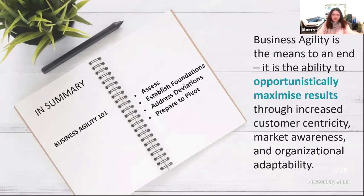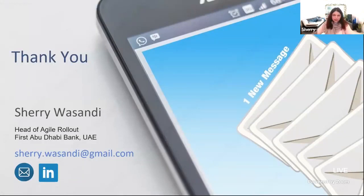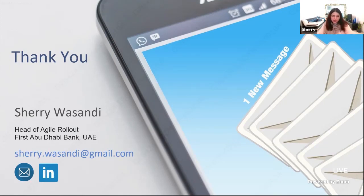In summary, as we approach the end of this session: assess where you are in terms of business agility, establish the foundations, address the deviations around data-driven product decisions, and be prepared to pivot. Business agility is the means to an end — it is the opportunity to opportunistically maximize results through increased customer centricity, market awareness, and organizational adaptability. Whatever is the area of improvement for you, please begin targeting it today. Thank you very much for attending this session, and I look forward to interacting with all of you in the lounge.